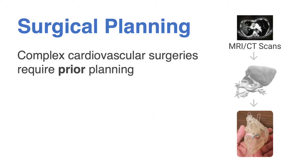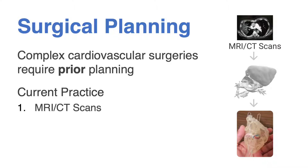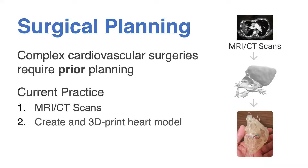Currently, when a surgeon wants to visualize a custom heart model in 3D space, they have to obtain a physical 3D model of the heart. This is done by first obtaining MRI or CT scans of a patient, which are then used by a cardiologist to develop a 3D model of the heart. Surgeons can print this model and use it to plan for their upcoming surgery by slicing and noting physical abnormalities.